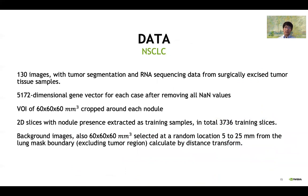Some details of the data we use. In total, we have 130 images together with their tumor segmentation and RNA sequencing data from tumor tissue samples. From gene data, after removing all invalid values, we end up with a vector of around 5,000. For each nodule, we cropped a 60 cubic millimeter VOI and eventually extracted 3,700 2D training slices. For background images, we also cropped VOIs of the same size, selected at a random location 5 to 25 millimeters from the lung mask boundaries.